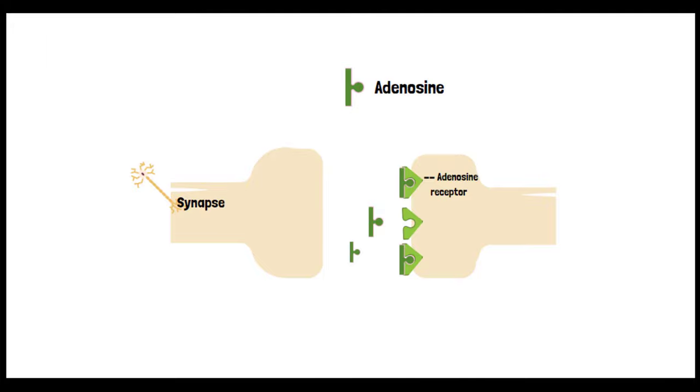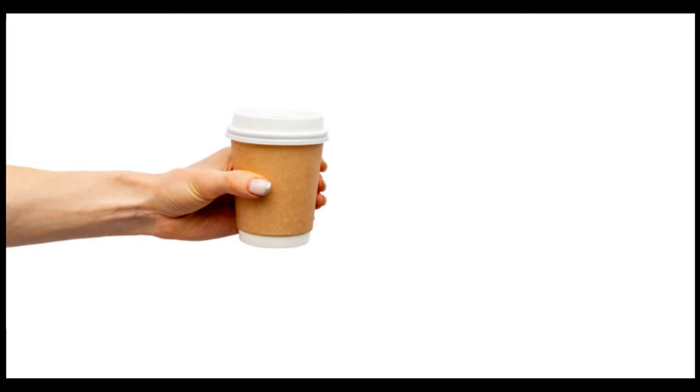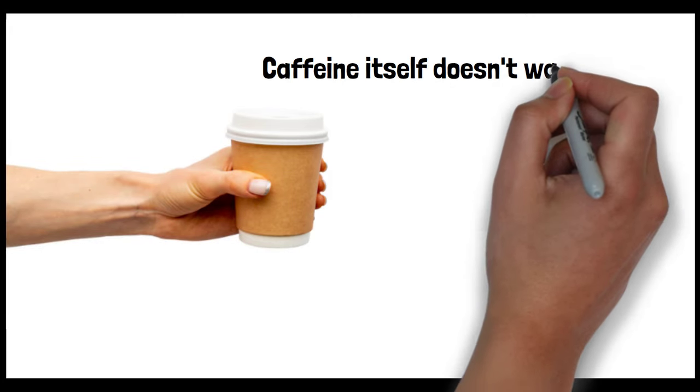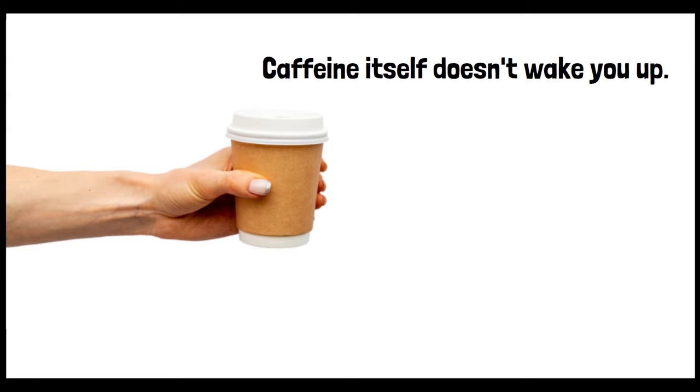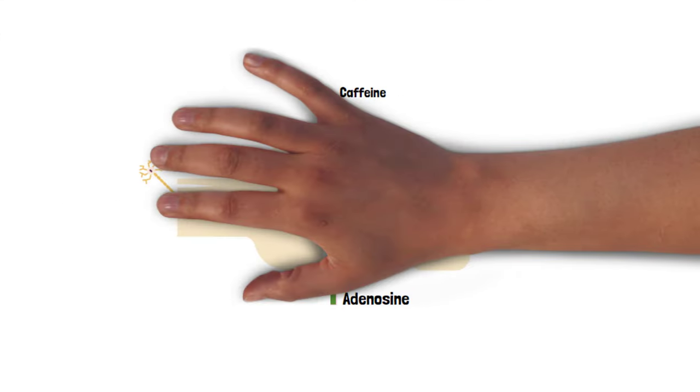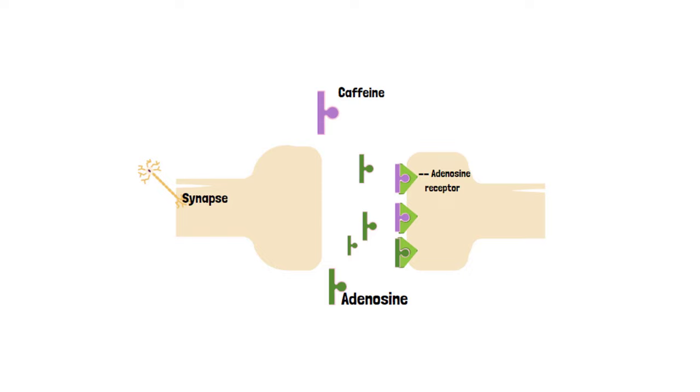Caffeine is structurally similar to adenosine, allowing it to bind to adenosine receptors. Caffeine itself doesn't wake you up in the sense of providing energy or eliminating the need for sleep. Instead, it works by blocking the action of adenosine. By binding to adenosine receptors without activating them, caffeine prevents adenosine from fulfilling its usual role in promoting sleepiness.